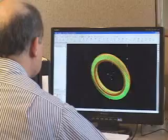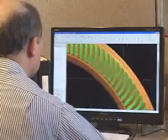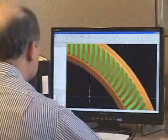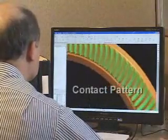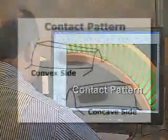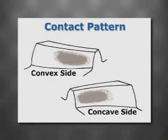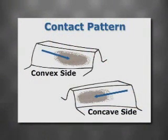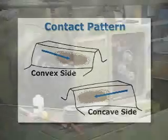A critical attribute of a spiral bevel gear's design is its contact pattern. Simply stated, the contact pattern is the area in which the gear teeth come in contact as they engage and disengage during their rotation.